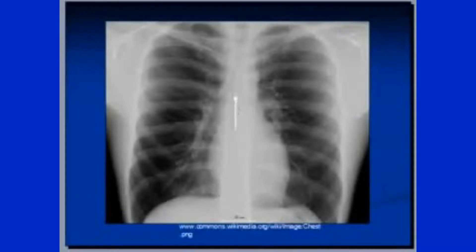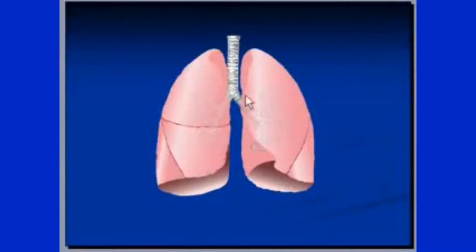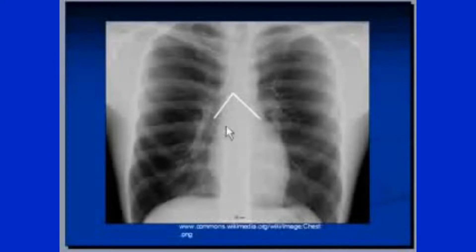This is the carina, where the trachea divides into the right and left main bronchus. The right side is always a bit steeper, which is the reason foreign bodies usually go into the right main bronchus rather than the left. The angle of the carina should normally be less than 90 degrees on an erect view. If it is more than 90 degrees, it means there is a mass or something altering this angle.